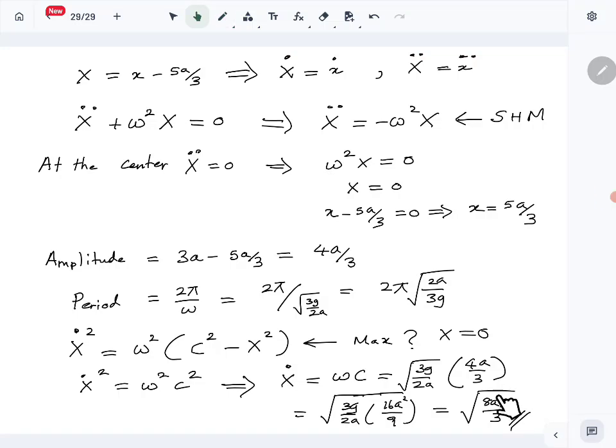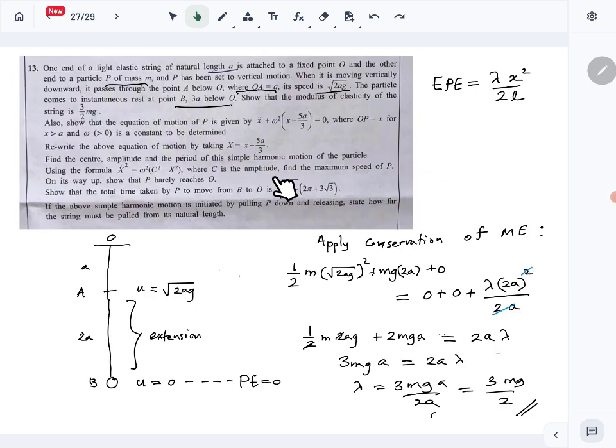Right, so we found the maximum speed. Now what do we need to show on its way up? Show that P barely reaches O. So what is happening from this point onwards? It starts going up because this is the maximum length at that point where v = 0. Then because of the tension it starts going up until this point A, then the string becomes slack. So then it is a motion under gravity. Up to this point it's simple harmonic motion, but at point A the motion becomes just a motion under gravity. There's no tension, the string becomes slack.